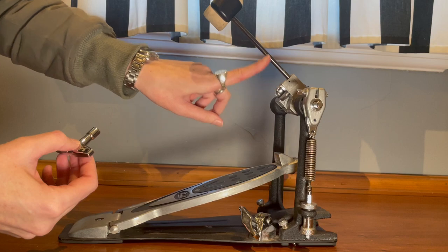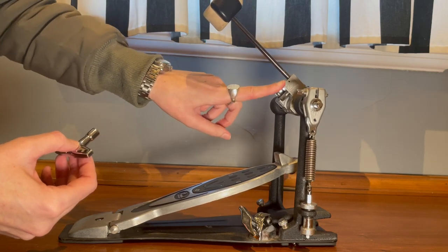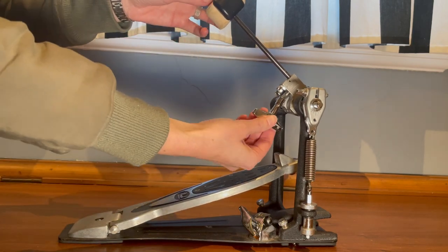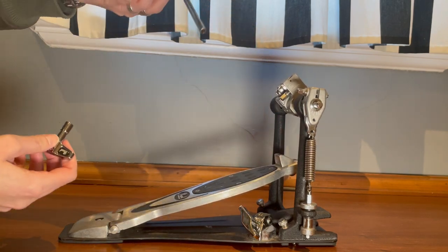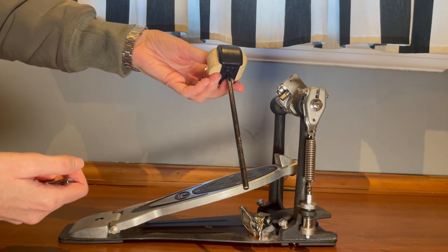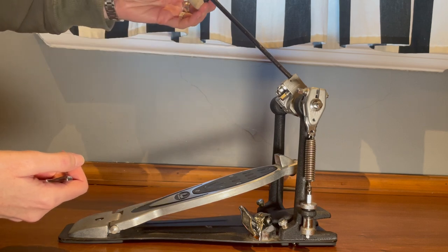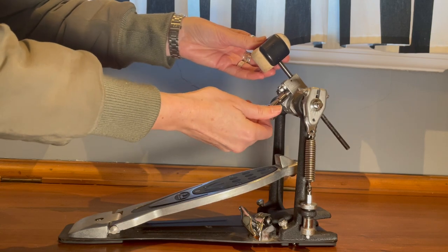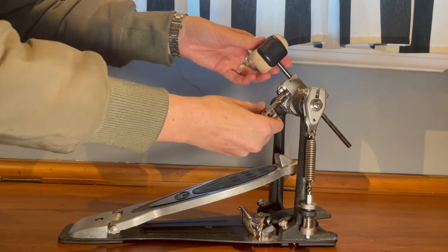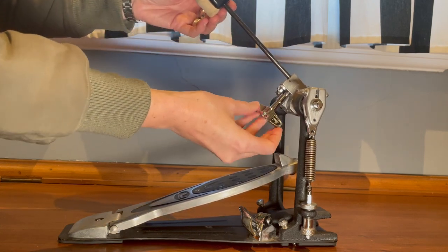You just need to loosen that, turn it to the left, and you can take the bass drum beater completely out. Then if you want to make it lower down, you can just tighten it there. That would definitely be too low though, or you can make it up higher and tighten it there.